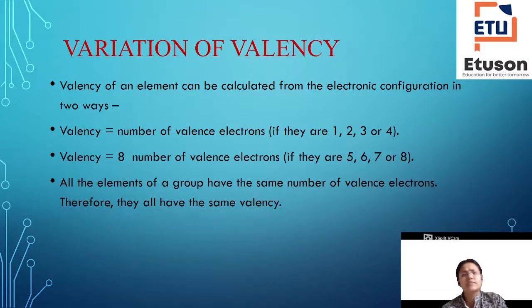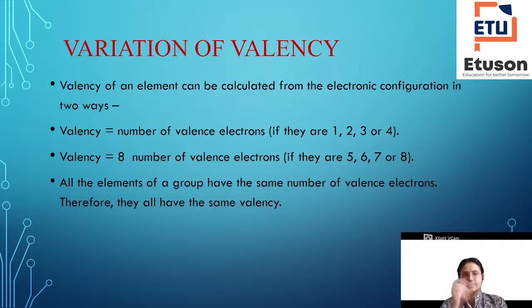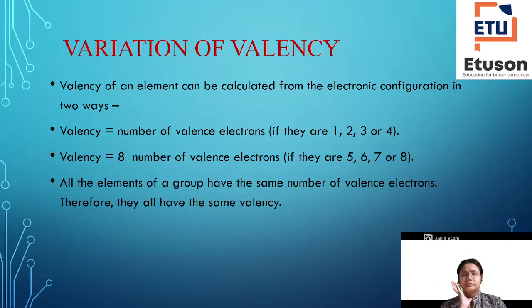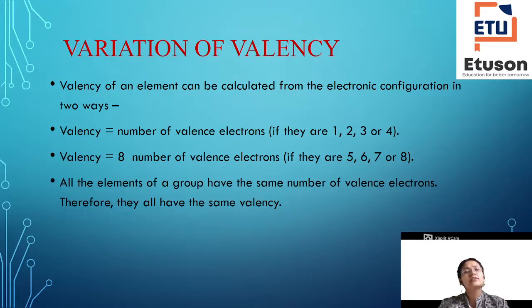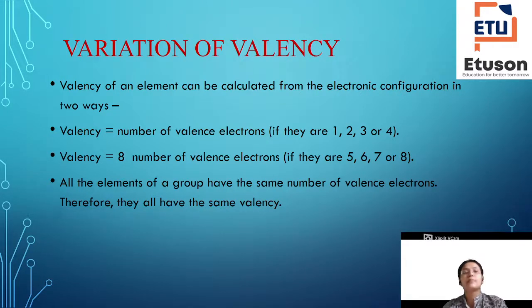Variation. Now what is the variation we see? Valency of an element can be calculated from the electronic configuration in two ways. What is the valency of an element? We can calculate it in two ways. Valency is actually the same as the number of valence electrons.